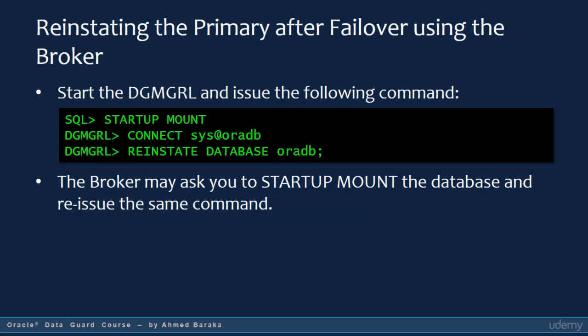If you want to reinstate your old primary database after failing over using the broker, the broker again makes your life easy. All you have to do is issue a single command, REINSTATE DATABASE, and the broker will take care of the rest. If you strictly followed the same procedure as described in this course to build up your Data Guard configuration databases, the command should complete successfully and you should have the old primary database up and running again. However, sometimes the broker asks you to remount the database and issue the reinstate command again.